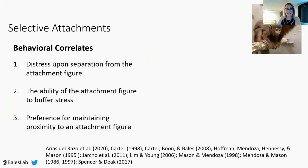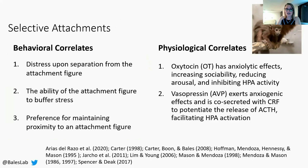We know that oxytocin, denoted OT, and vasopressin, denoted AVP, play important roles in social bonding in monogamous rodents and primates. These neuropeptides interact with the hypothalamic-pituitary-adrenal axis, or HPA axis, making oxytocin, vasopressin, and cortisol important mechanisms to study when examining selective attachments.